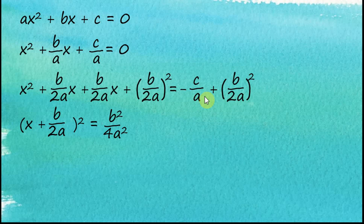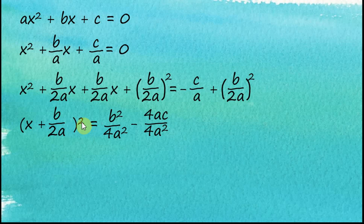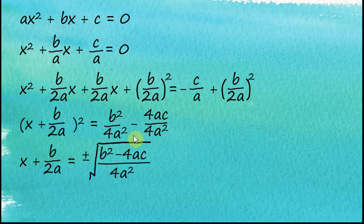Multiplying by 4a, the denominator becomes 4a² and c multiplied by 4a becomes 4ac, so it becomes minus 4ac over 4a². Now we have the same denominators. To eliminate the square on the left side, we apply the square root. After applying the square root, the left side becomes x + b over 2a. We can join the right-hand side together, giving b² − 4ac over 4a².